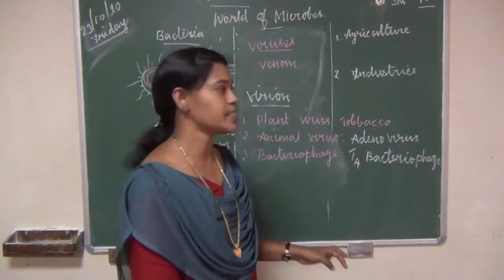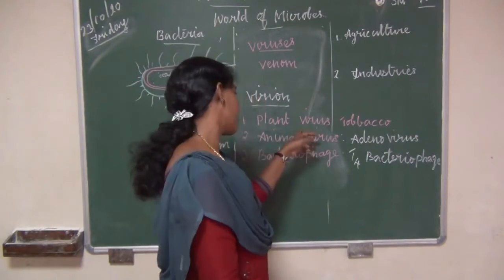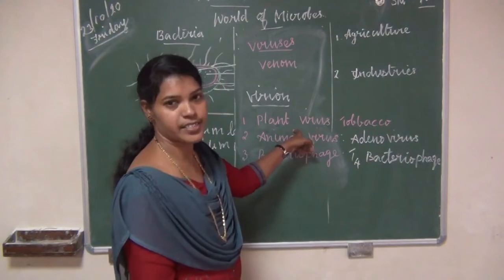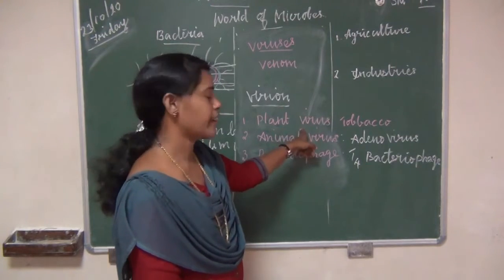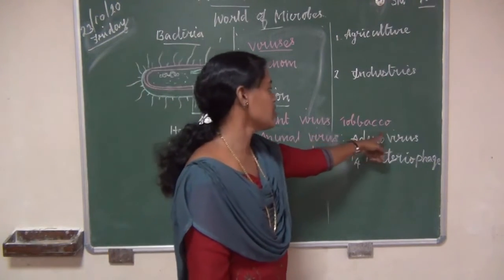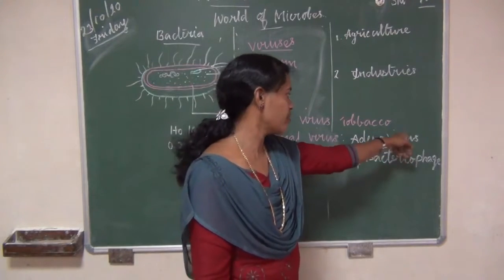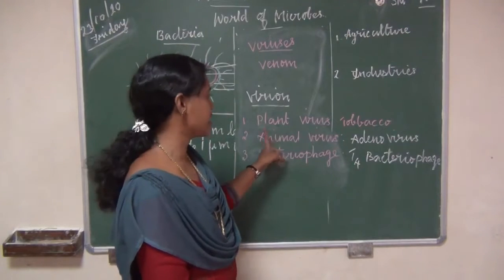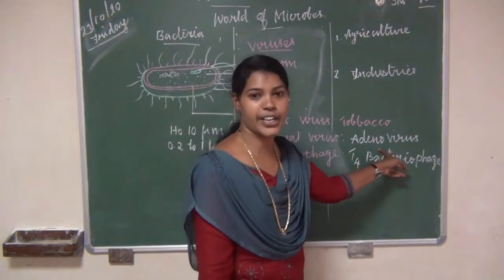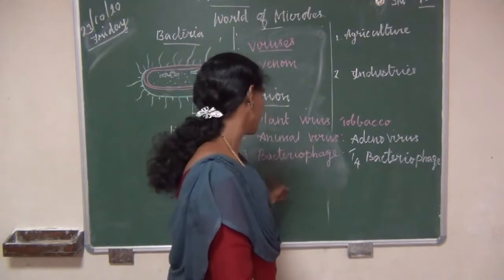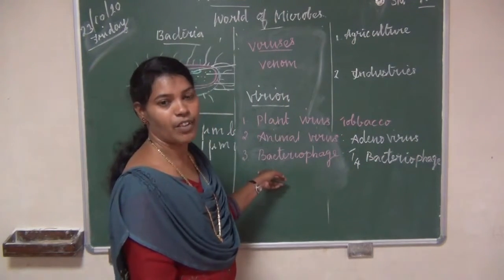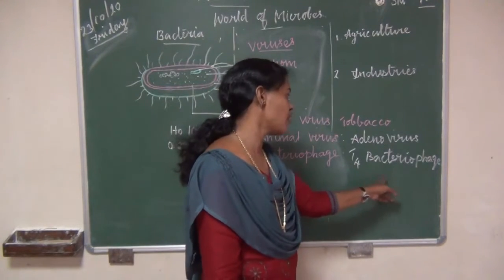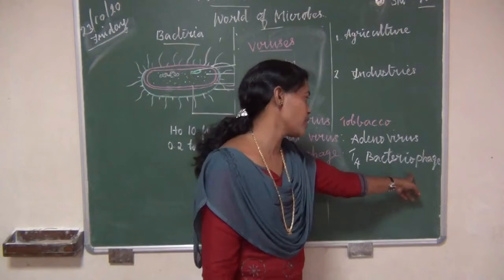What are the three types of viruses? Plant virus, animal virus, and bacteriophage. Plant virus: viruses that infect plants; example, tobacco mosaic virus. Animal virus: viruses that infect animals; example, adenovirus. Bacteriophage: viruses that infect bacterial cells; example, T4 bacteriophage.